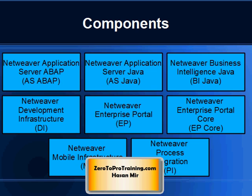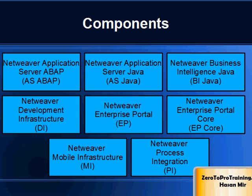The following components may be installed in the stack, depending upon the requirements: NetWeaver Application Server ABAP, known as AS ABAP; NetWeaver Application Server Java, known as AS Java; NetWeaver Business Intelligence Java, known as BI Java; and NetWeaver Development Infrastructure, known as DI.